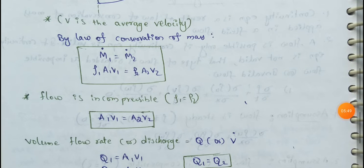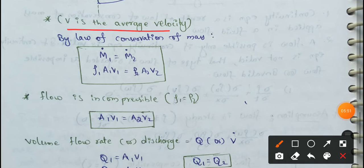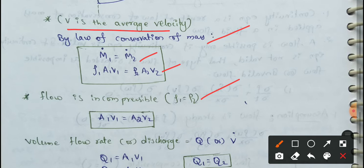V is the average velocity. By the law of conservation of mass, ṁ₁ = ṁ₂. Since ṁ = ρAV, we get: ρ₁A₁V₁ = ρ₂A₂V₂. For incompressible flow, ρ₁ = ρ₂, so they cancel, leaving: A₁V₁ = A₂V₂.